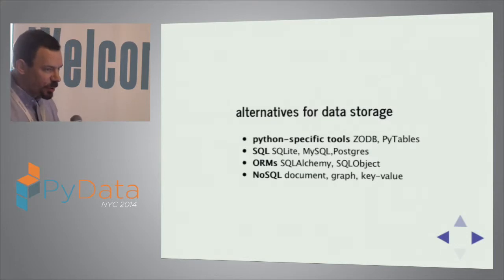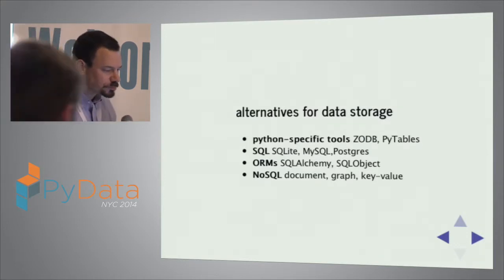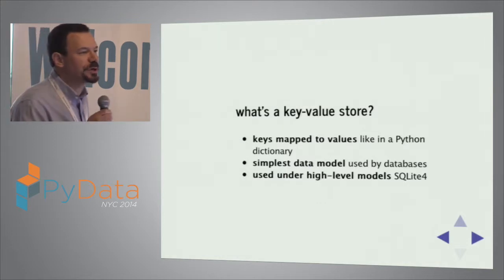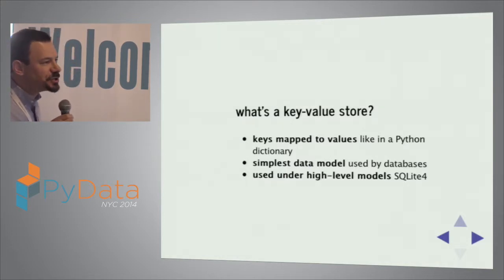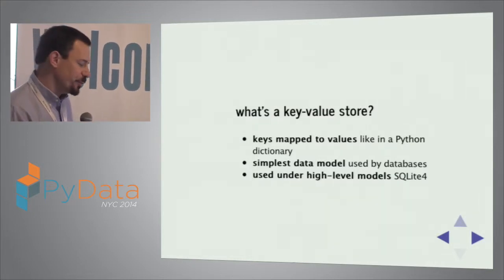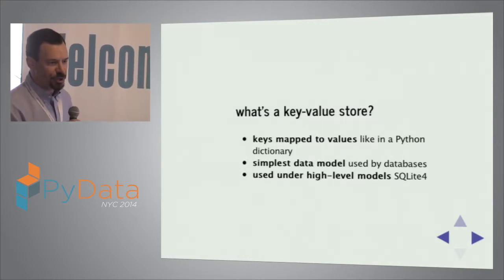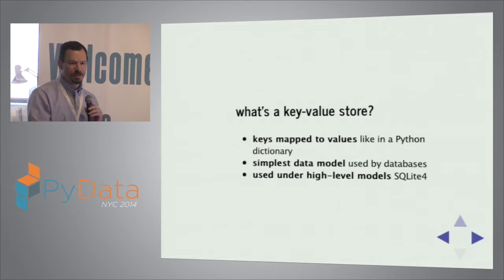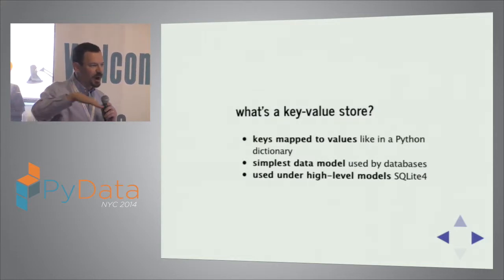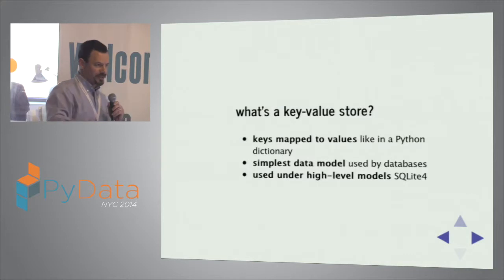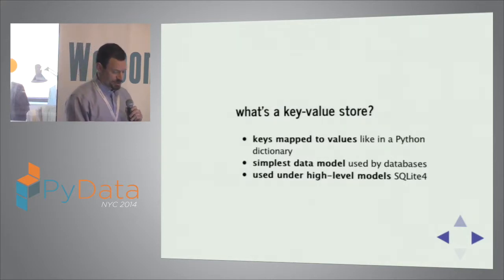FoundationDB is a key value store that works on distributed clusters. A key value store is a very simple concept: keys map to values, much like a Python dictionary — essentially the simplest data model for a database. It underlies almost every other data model being used. Most SQL databases, when you get down to how they're actually storing data on disk, use something like a key value store. In SQLite 4, that's made explicit — they actually expose the key value store API.